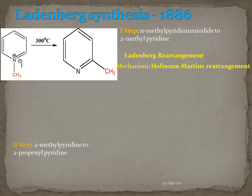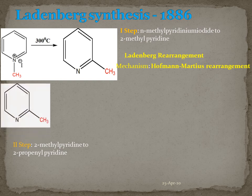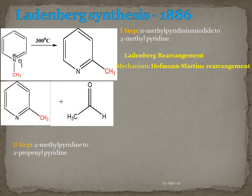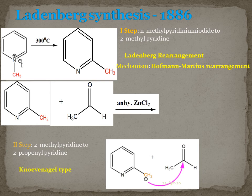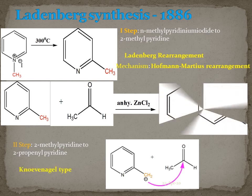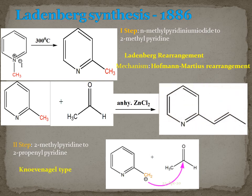In the second step, 2-methylpyridine is converted into 2-propenylpyridine. For that, 2-methylpyridine is reacted with acetaldehyde in the presence of a Lewis base. The CH2 carbanion attacks the carbonyl carbon in a Knoevenagel-type reaction to give 2-propenylpyridine.